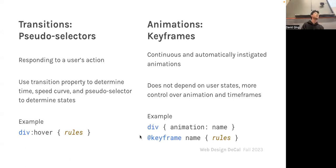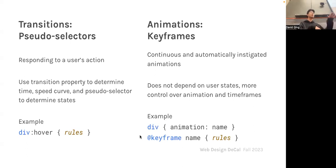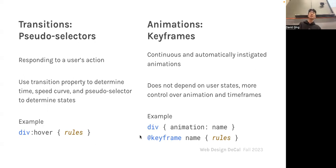Regarding triggering animations on scroll: we'd probably need JavaScript so that upon scrolling to a desired location, JavaScript modifies the CSS to activate the animation. CSS doesn't have a native way to detect scroll on its own. For now, if you wanted to simulate it, you could just delay the animation by a few seconds, but the more sophisticated scroll-trigger approach will be covered in future lectures.